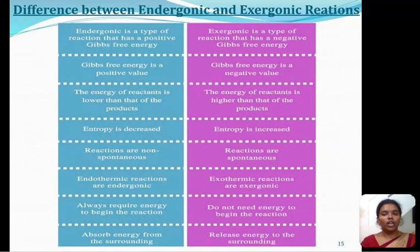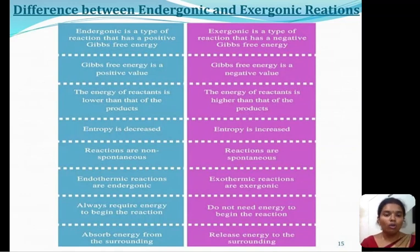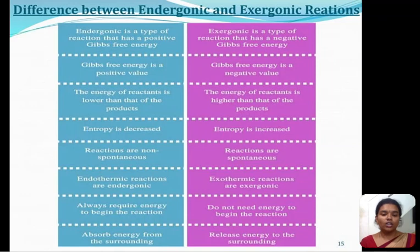This is the difference between endergonic and exergonic reactions. Endergonic reactions have a positive Gibbs free energy; exergonic reactions have a negative Gibbs free energy. The energy of the reactants is lower than the products in endergonic reactions, whereas the energy of the reactants is higher than the products in exergonic reactions. Entropy decreases in endergonic reactions, whereas entropy increases in exergonic reactions. Endergonic reactions are non-spontaneous; exergonic reactions are spontaneous. Endergonic reactions always require energy; exergonic reactions release energy to the surroundings.